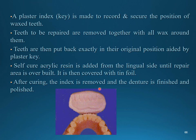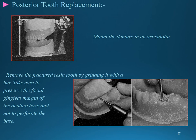Another method for the same situation is using a plaster index (key): a record is made to secure the position of wax and teeth. Teeth to be replaced are removed along with all wax around them. The teeth are then replaced back in exactly the original position aided by the plaster key. Self-cure acrylic resin is added from the lingual side until the repair area is overbuilt. After curing, the index is removed and the denture is finished and polished.